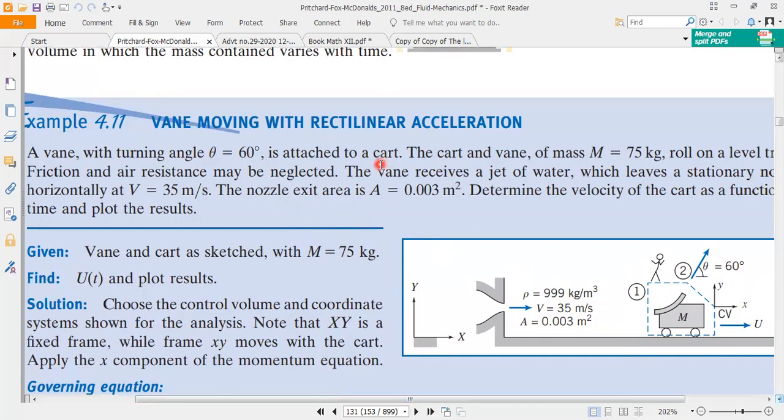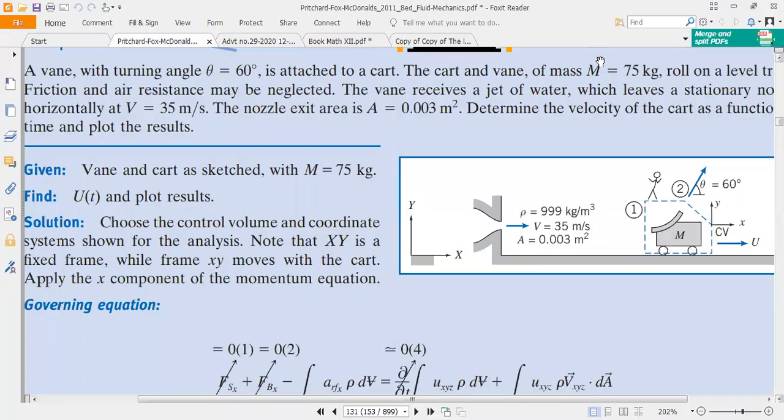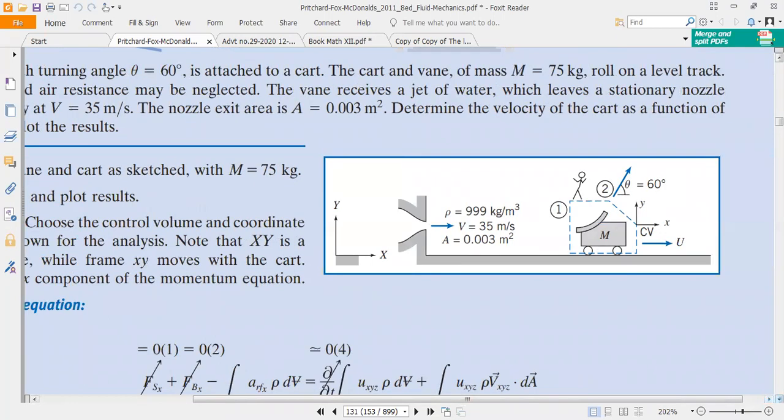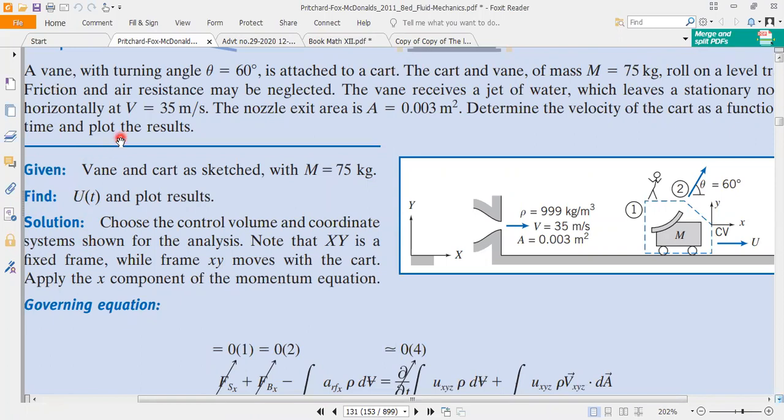A vane with turning angle theta equals 60 degrees is attached to a cart. The cart and vane of mass M equals 75 kg roll on a level track. Friction and air resistance may be neglected. The vane receives a jet of water which leaves a stationary nozzle horizontally at V equals 35 meters per second. The nozzle exit area is A equals 0.003 square meters. Determine the velocity of the cart as a function of time and plot results.